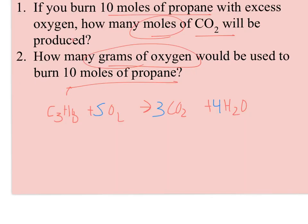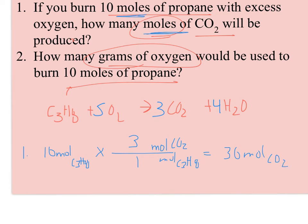So there's my balanced equation. C3H8, one mole of it, reacts with 5 moles of oxygen to produce 3 moles of CO2 and 4 moles of H2O. So question number one, if you burn 10 moles of propane, so 10 moles of C3H8, how many moles of CO2 would you get? So I'm going to put CO2 over C3H8. And when I look at my balanced equation, I see I should get 3 CO2 from one mole of propane. So this means I could expect 30 moles of CO2. And I'm done, because I started with moles and I'm being asked to calculate moles.